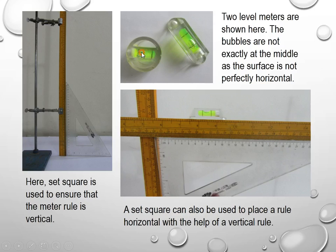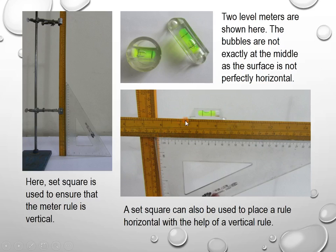In this diagram, a vertical meter rule is ensured to be vertical by using a set square. A set square can also be used to keep two scales perpendicular to each other. By using the set square, we keep one scale horizontal while the other is vertical. So a set square is a very useful apparatus.